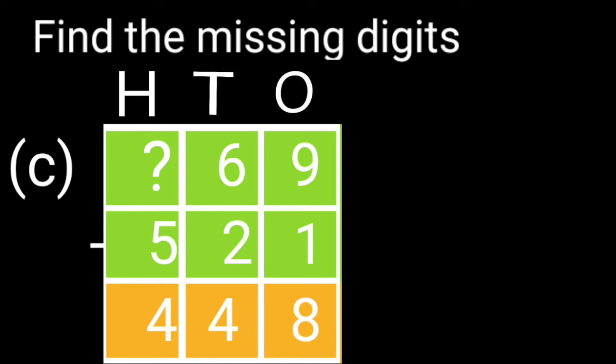Now the digit of bigger number is missing at 100's place. So to find that we will add the digit of smaller number and the digit of difference. 5 plus 4 is equal to 9.